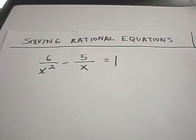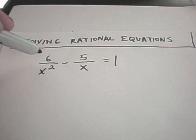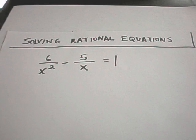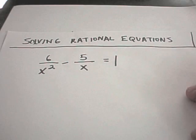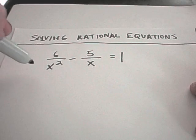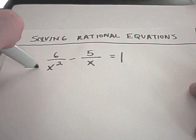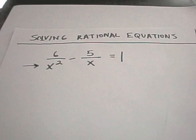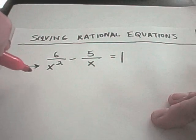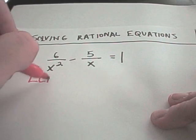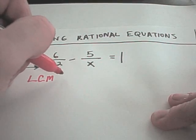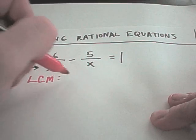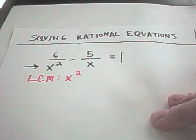So in this case we have to solve the equation 6 over x squared minus 5 over x equals 1. The easiest way is to try to get rid of the fractions. You look at the denominators of all the fractions and take the least common multiple. Here our least common multiple of x and x squared is going to be x squared.